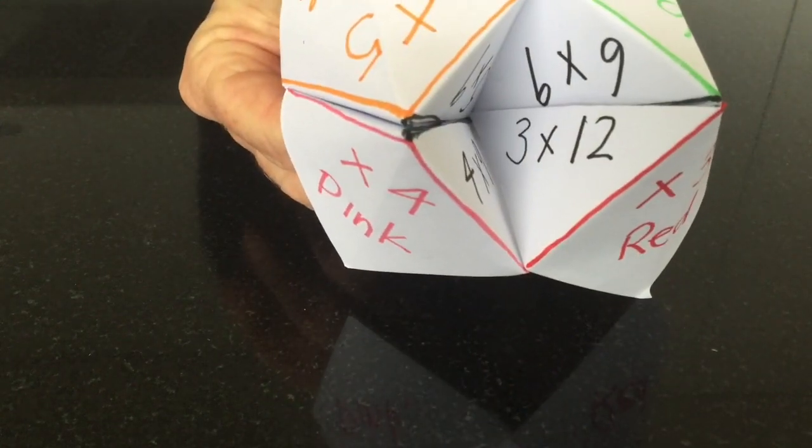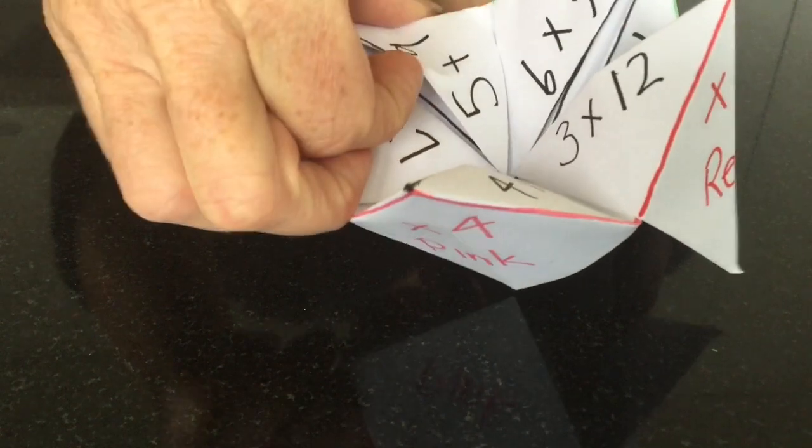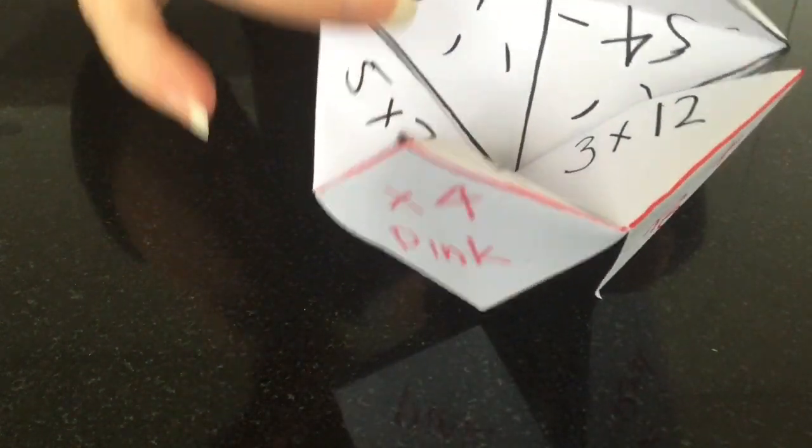So the way it works is that I choose a colour, and then the person who's holding the fortune teller does that number, and then you answer the question.